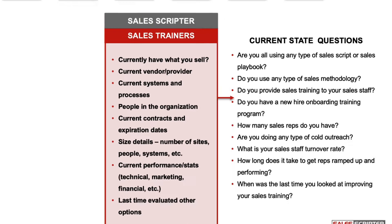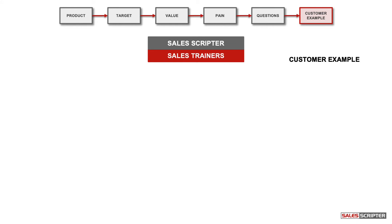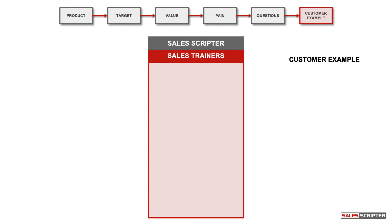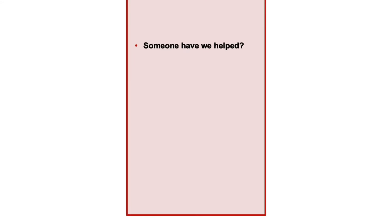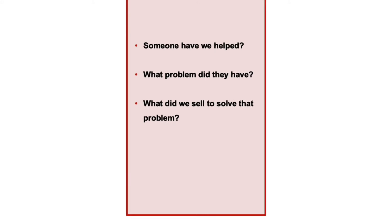The last step is to create an example of another customer you sold your product or service to, which you can share with prospects to further explain how it helps and to build their interest and establish credibility. Here is a template to create a short and concise customer example — concise enough to use in a voicemail, a cold email, or as an introduction to a cold call. You create it by answering four questions: the name of a customer you've worked with, what problem they had, what you sold them to solve that problem, and what improvements they were able to achieve.